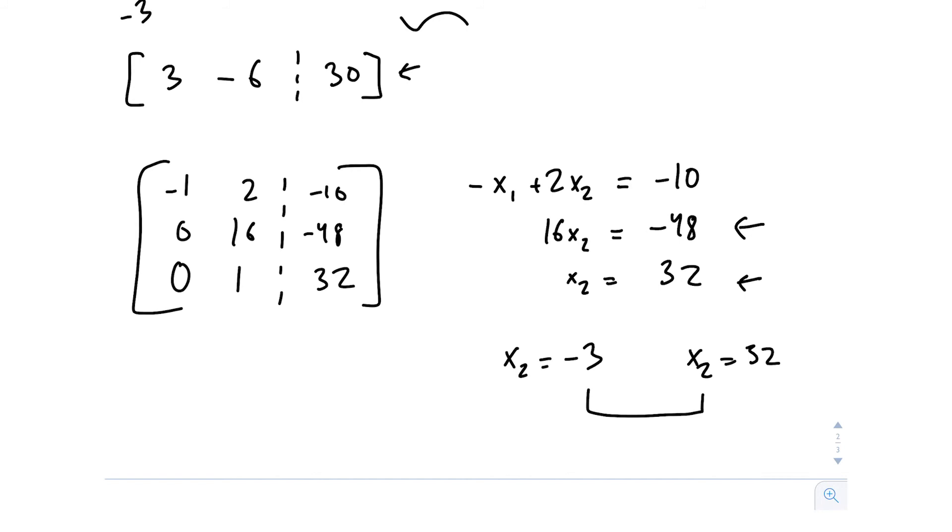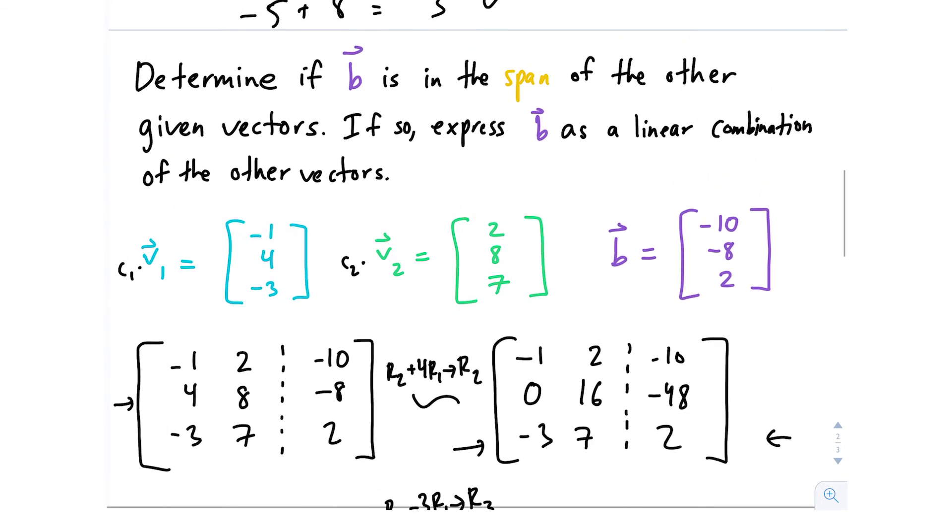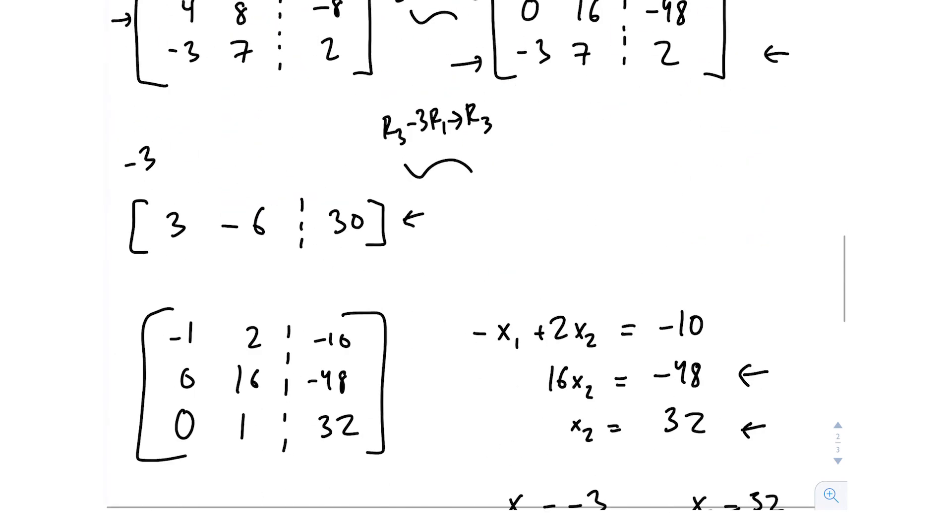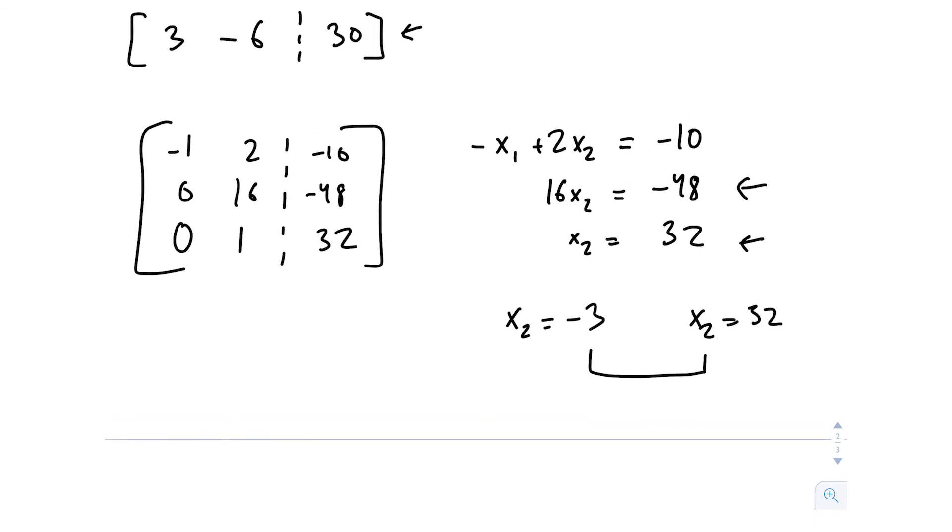We cannot express B as a linear combination of v1 and v2. It is not within the span. We would say something like c1, whatever constant we're multiplying by v1, does not exist, and c2 does not exist, because B is not within the span of v1 and v2.